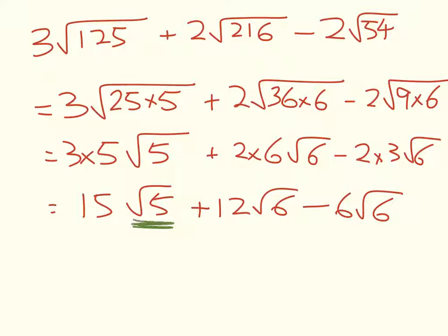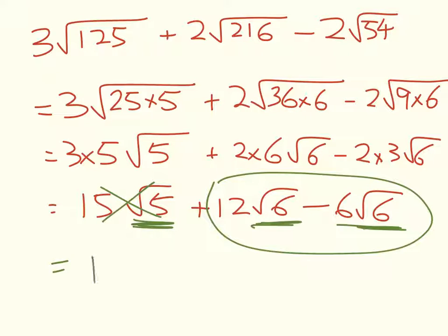We've got a root 5 thing here, and we've got a root 6 thing here and a root 6 thing here. So these are like terms, this is different. So my final answer will be 15 root 5 plus 12 minus 6 is 6, so 6 root 6.